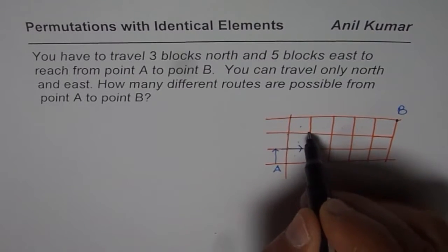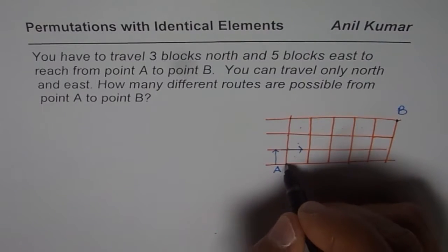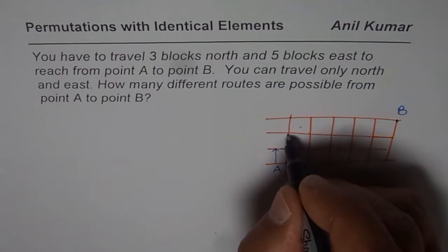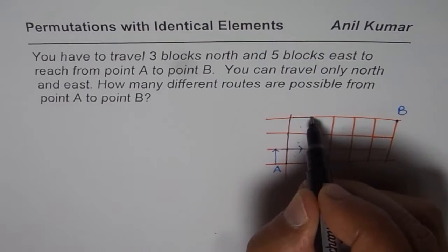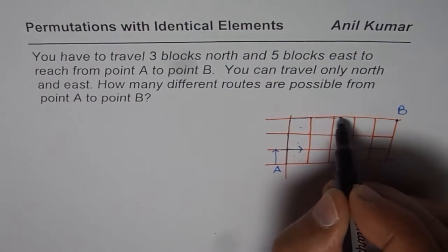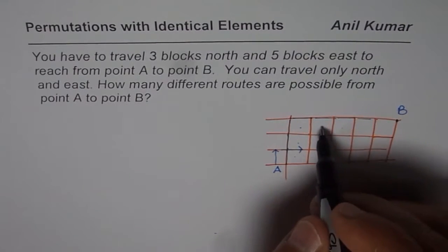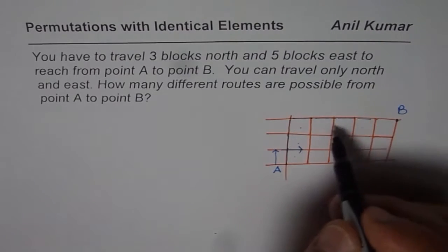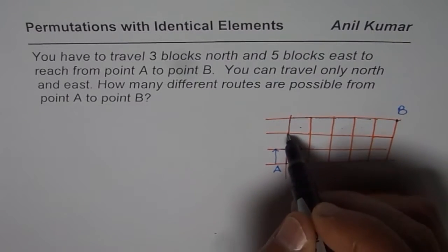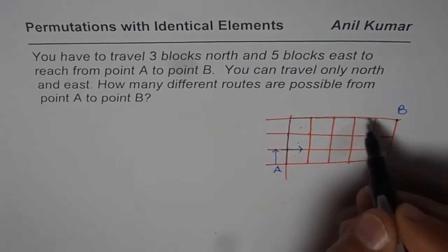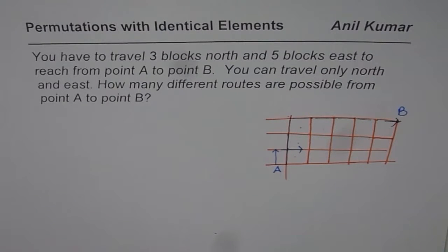From here: 1, 2, 3, 4, 5. So you go 3 up — 1, 2, 3 — and then 5 more steps. 3 and 5 should be 8. So 1, 2, 3, 4, 5, 6, 7, 8 — and you reach point B.